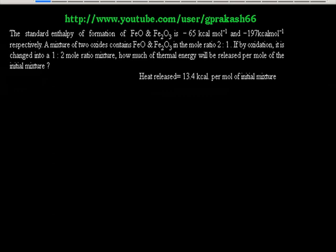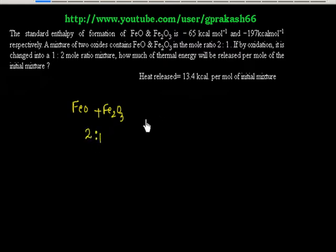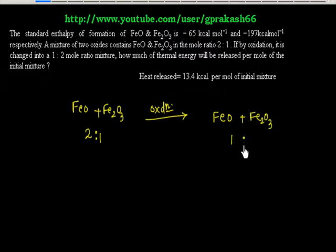Let us discuss this problem. We have a mixture of FeO and Fe2O3, where the initial mole ratio is 2:1 — so 2 moles of FeO and 1 mole of Fe2O3. By oxidation, this mixture has been changed to a mole ratio of 1:2. Iron is in 3+ state, so the ratio of Fe3+ has increased. This means some of the FeO has been oxidized, and that is why the Fe2O3 percentage has increased.